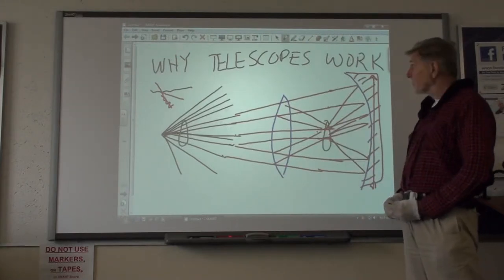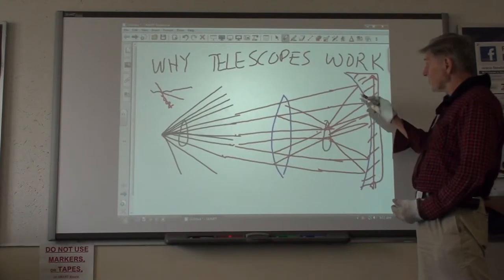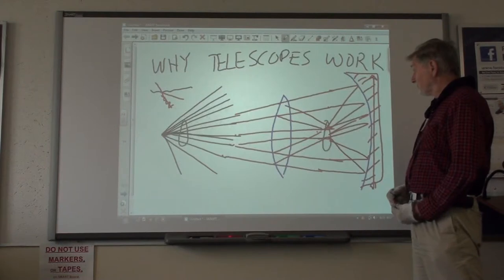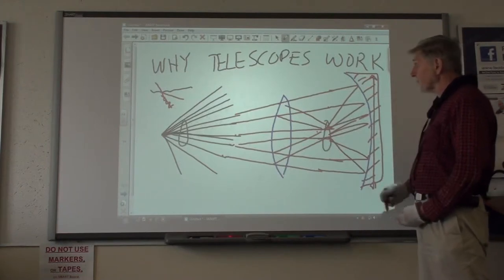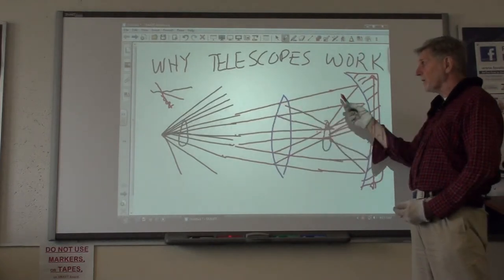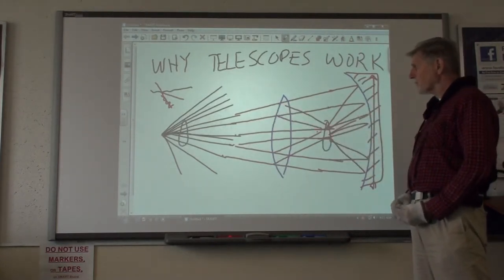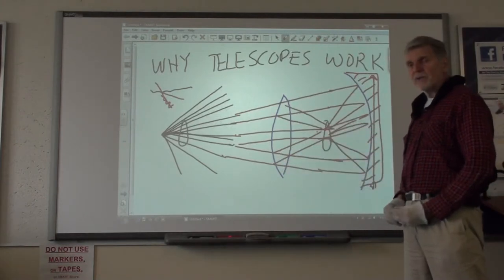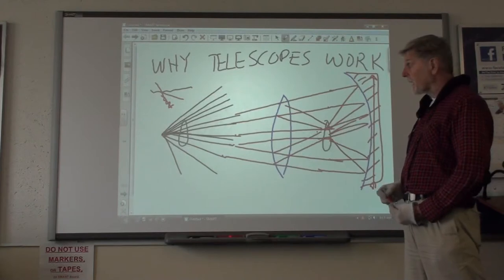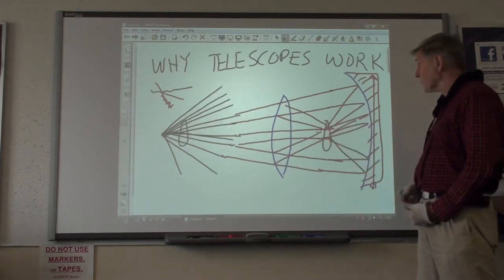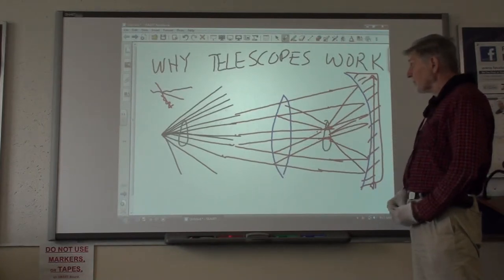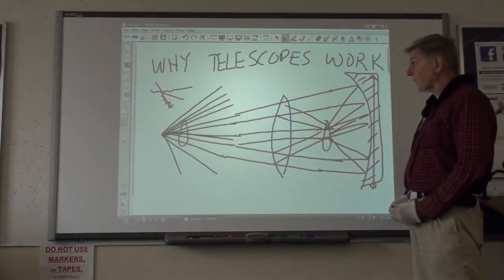So these are called reflector telescopes and they work on this principle that we have just described. Now the beauty of the reflected telescope is not only can it be larger in size, but it will focus lights of all colors, red, green, yellow, and blue, into exactly the same point. But the property of the refractor or the one that bends it is that different colors will be bent slightly different angles. So you will get some smearing of the colors as you see them with your eye.